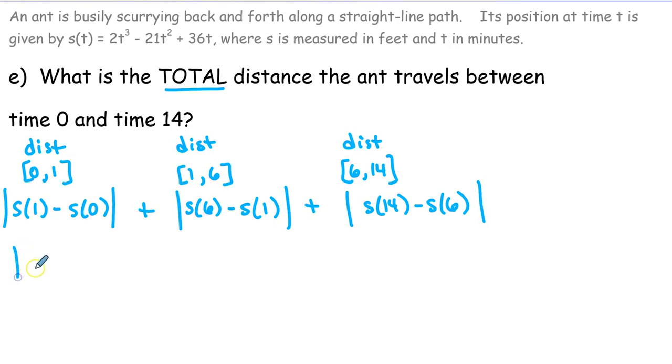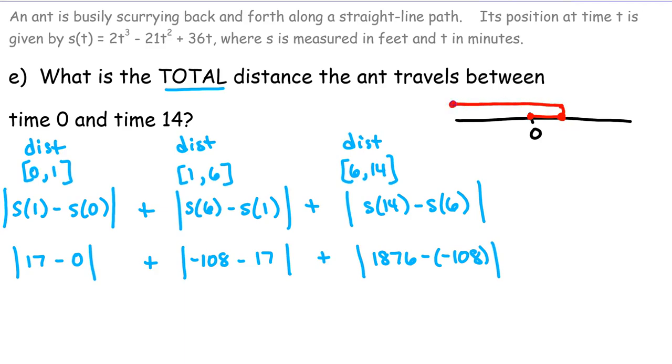I already calculated for us s(1) by putting 1 into the original function, and you get 17. And s(0) we know is 0. And then for the next interval, I calculated s(6), and that's -108. And s(1) is still 17. And then finally, we already calculated s(14). It was 1876. And then s(6) was -108. So maybe if we think of our path for our ant as having like a 0 right here, I guess what they're doing is they're starting at 0. They're going to 17, but then they turn around and they go from 17 back down to -108. But then they turn around and they go from -108 over all the way to 1876. So that's the path of the ant. And this is time 1, and this is time 6, and this is time 14.